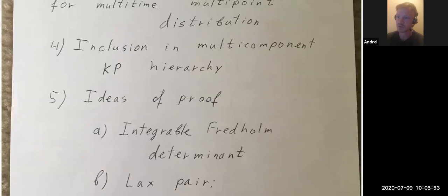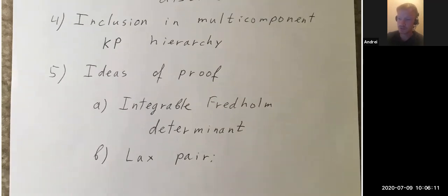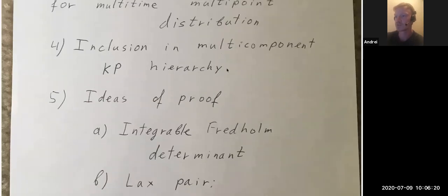The ideas of proof are more or less standard for the integrable community. We look at the integrable Fredholm determinant and the corresponding Riemann-Hilbert problem for this determinant, obtain the Lax pair, and the zero curvature condition — the commutation relation — provides the KP equation or the multi-component KP hierarchy.